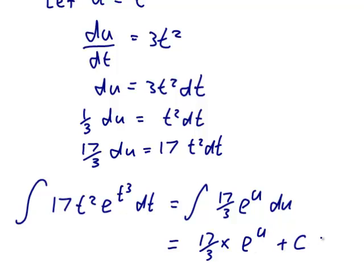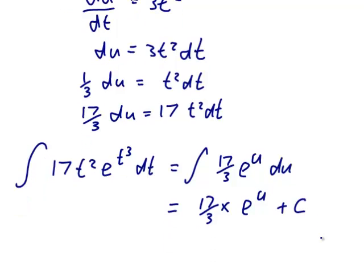Plus C because it's an indefinite integral. So we get 17/3 e^u + C. But u is actually equal to t³, so the final answer is 17/3 e^(t³) + C.